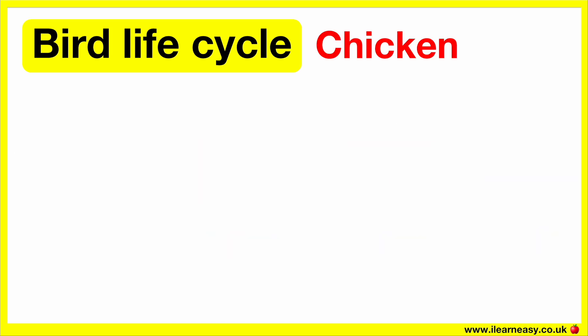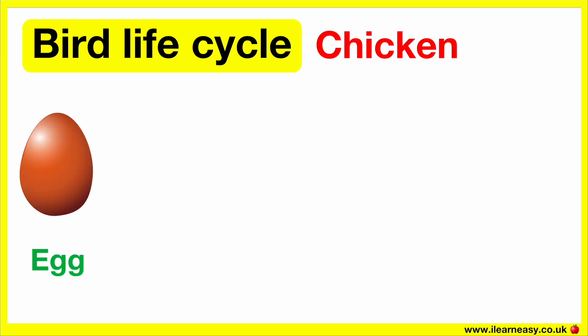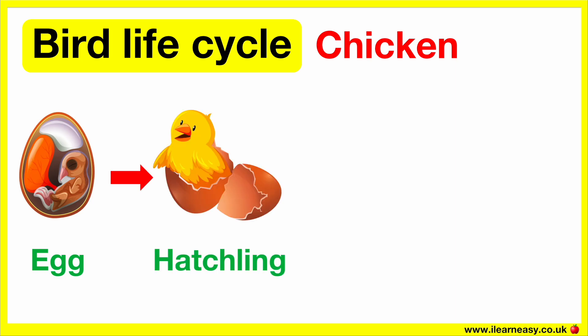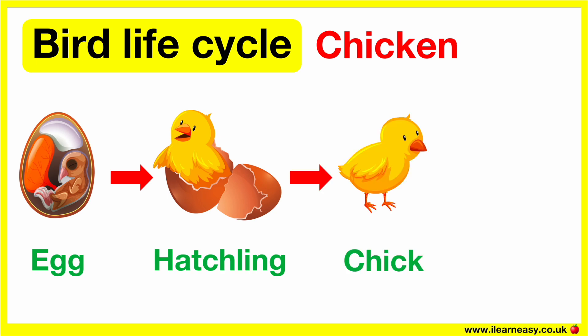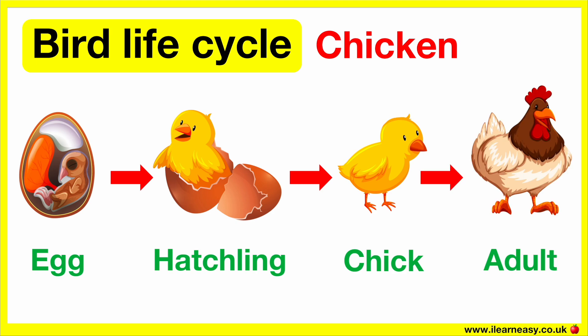A chicken is an example of a bird, so the life cycle is the same. The chicken lays an egg. The egg is then incubated until the embryo inside forms into a chick. Once the chick has developed, it will hatch out of the egg and be cared for by its parents. After a while, the chick will grow and learn to be independent as it becomes an adult.